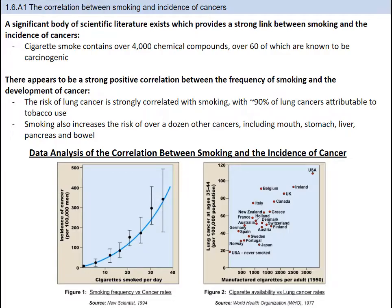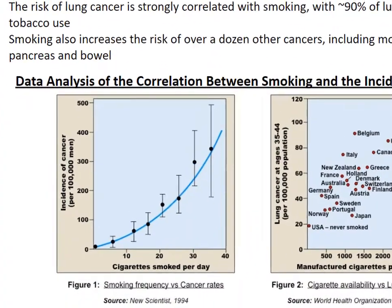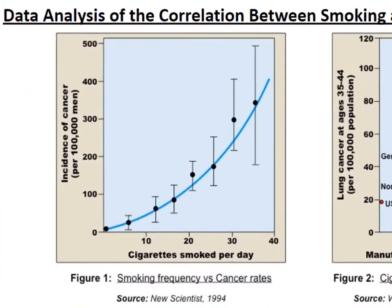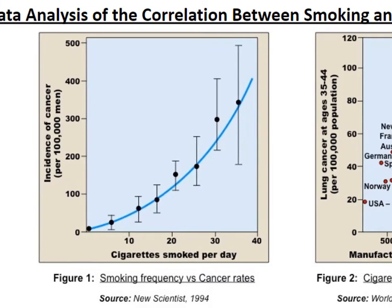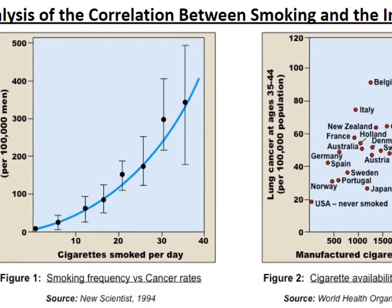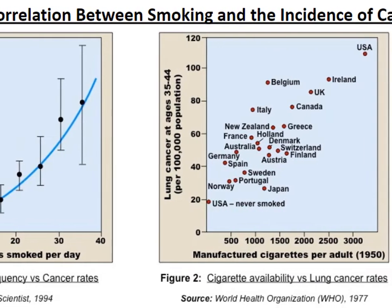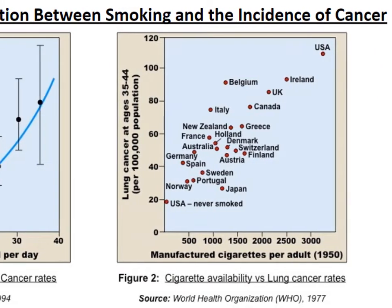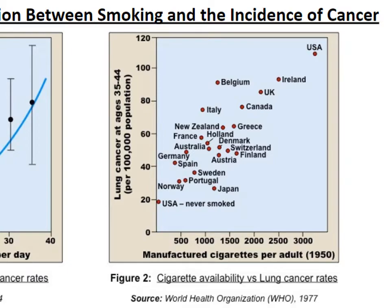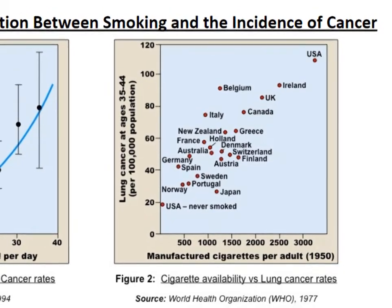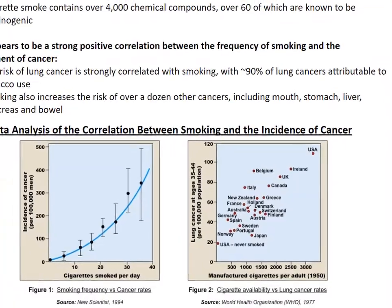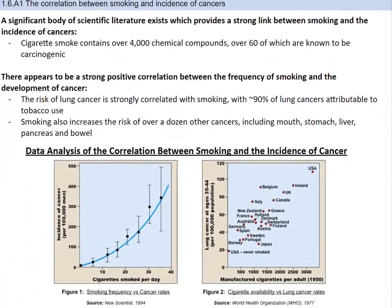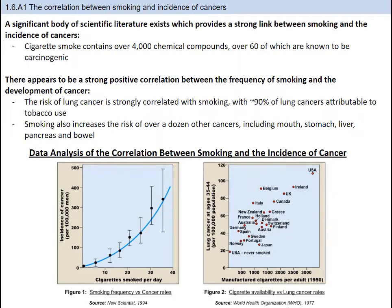One specific application is the correlation of smoking and the incidence of cancers. Cigarette smoke contains over 4,000 chemical compounds, over 60 of which are known to be carcinogenic. There appears to be a strong positive correlation between the frequency of smoking and the development of cancer — roughly 90% of lung cancers are attributable to tobacco use. Smoking also increases the risk of over a dozen other cancers, including mouth, stomach, liver, pancreas, and bowel cancer. The graphs show this positive correlation: the more a person smoked, the higher the incidence of cancer. Tobacco companies initially claimed other mutagens caused the cancer, but have since admitted the findings were sound and were trying to protect their businesses.